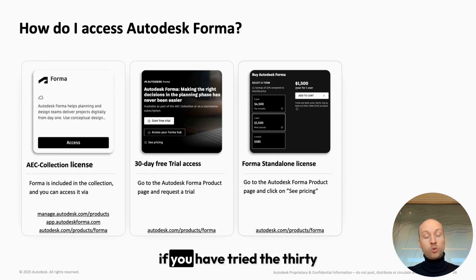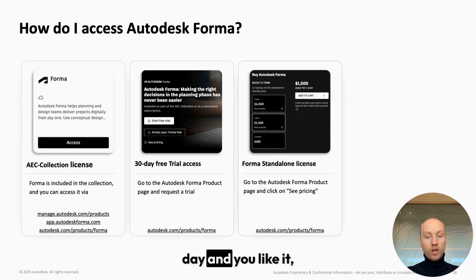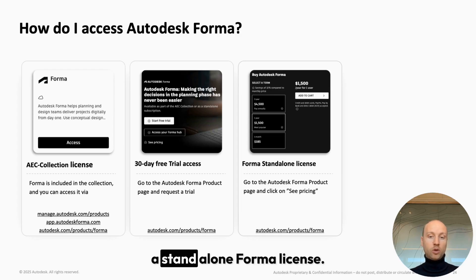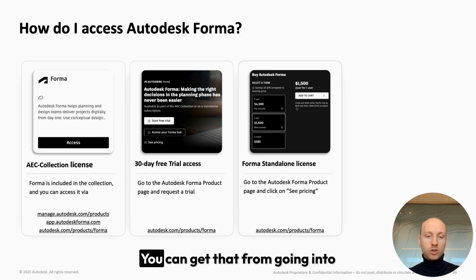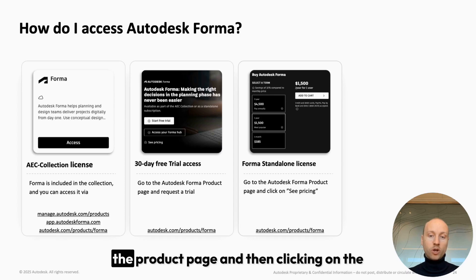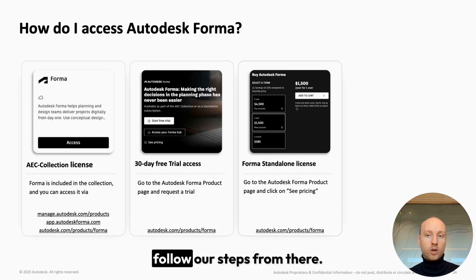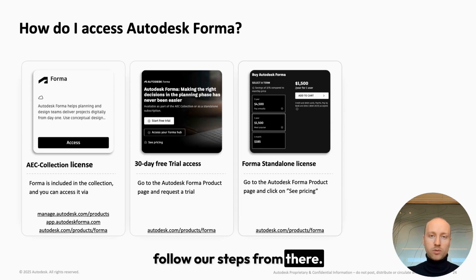And if you've tried the 30-day trial and you like it, it's also possible to buy a standalone Forma license. You can do that by going to the product page, clicking on the 'See Pricing' button, and following the steps from there.